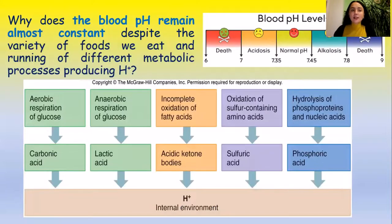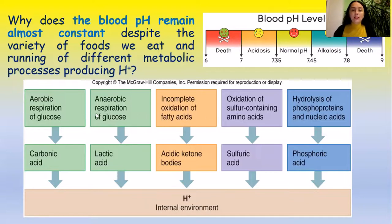Have you ever thought about why blood pH remains almost constant despite the variety of fruits we eat and the running of different metabolic processes producing hydrogen ions? From the schema below, you can see at least five different metabolic processes which are constantly releasing H+ ions into the internal environment.